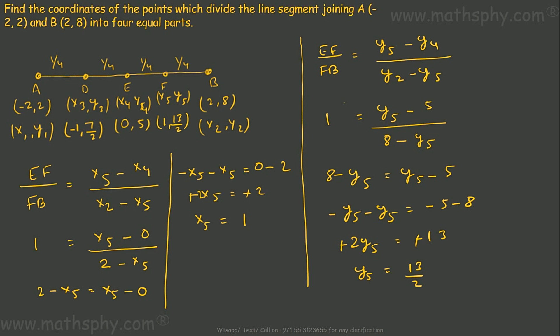Now I have all 3 coordinates — the 1st, 2nd, and 3rd points — which are splitting line segment AB into 4 equal parts.